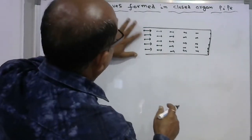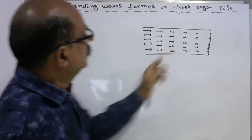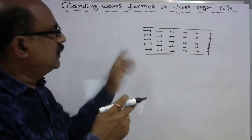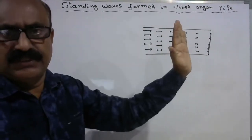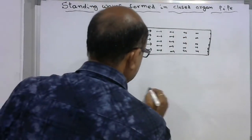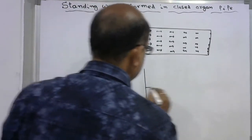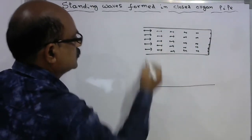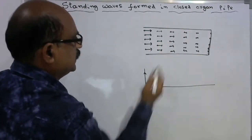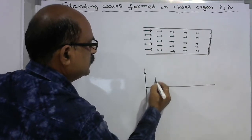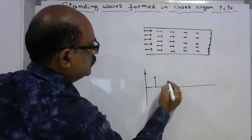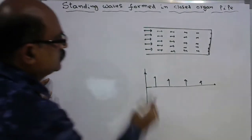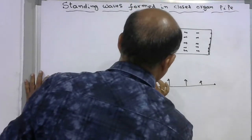When a disturbance is created, the particles at the open end have more degree of freedom and move with maximum displacement. The particles at the closed end have almost zero degree of freedom, so the net displacement at the closed end is zero. If you observe the displacement versus position, the displacement at the open end is maximum and gradually decreases to zero at the closed end, forming a curve like this.